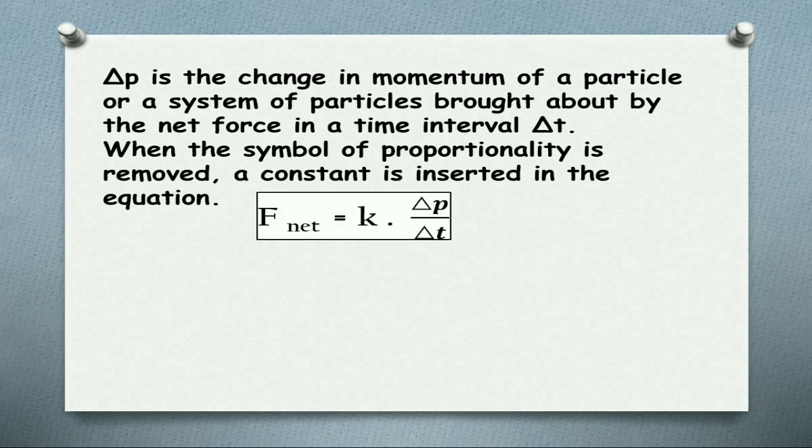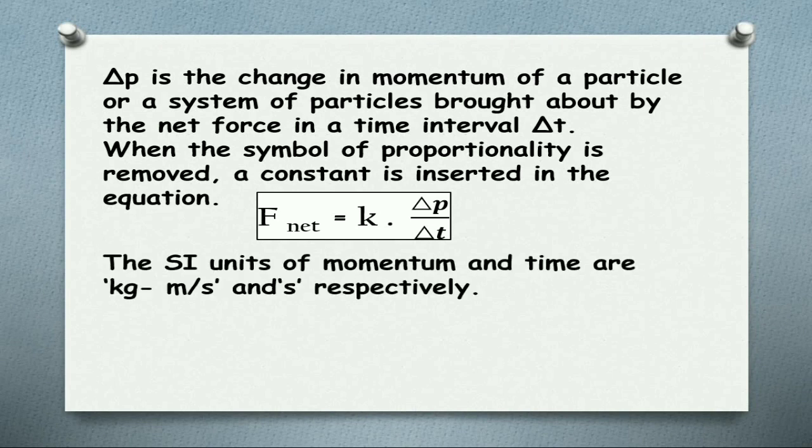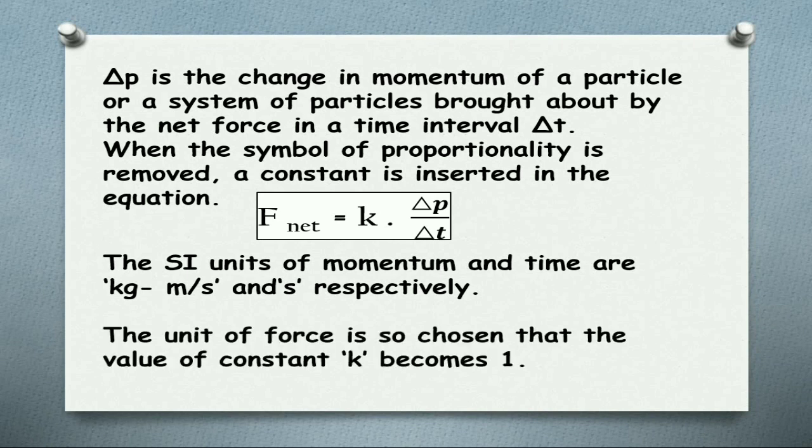F net previously is proportional to delta P by delta T. Now we take out the proportionality and place a constant K. Therefore F net equals K into delta P by delta T. The SI units of momentum and time are kilogram meter per second and second respectively. By dividing, the unit of force becomes kilogram meter per second square. And here the constant K becomes one.